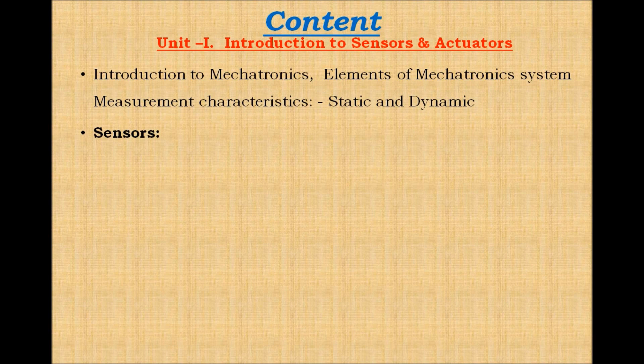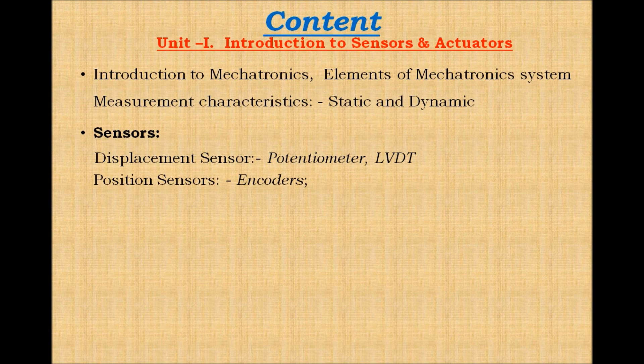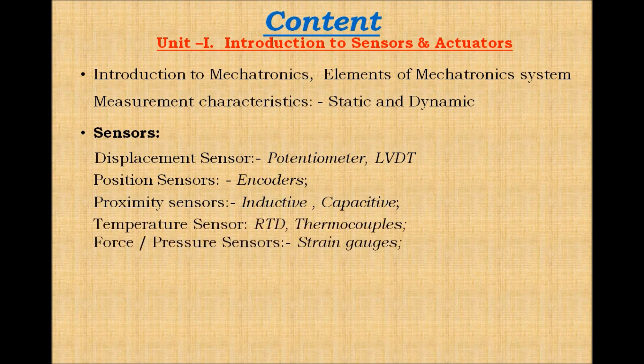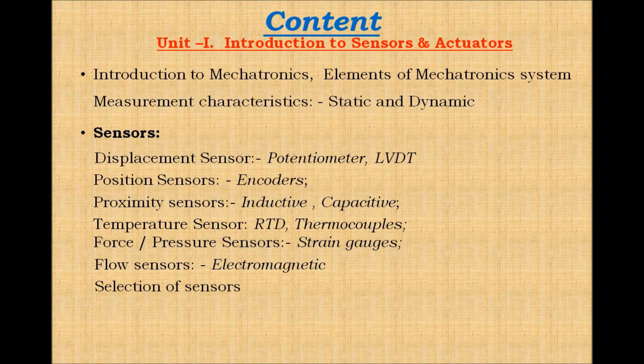The following types of sensors will be discussed: displacement sensors including potentiometer and LVDT; position sensors including encoders; proximity sensors including inductive and capacitive types; temperature sensors including RTD and thermocouples; force and pressure sensors including strain gauges; flow sensors including electromagnetic flow sensors; selection of sensors; and actuators such as stepper motor, servo motor, and solenoids.